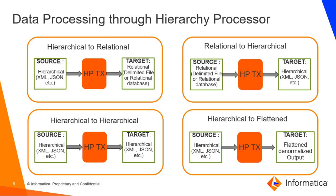For data processing modes, we have four types. The first one is hierarchical to relational — this is for converting one hierarchical input group, for example from JSON, XML, Avro, or Parquet, to multiple output groups such as delimited files or relational databases. The second one is relational to hierarchical, used for converting relational input groups to one single hierarchical output group.